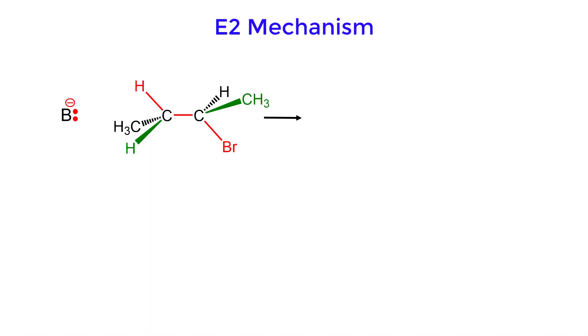For an E2 reaction to occur, the hydrogen and leaving group must be in the same plane, or anti-coplanar, as shown in the wedged and dashed diagram. Colors are used to help you visualize the conformation.